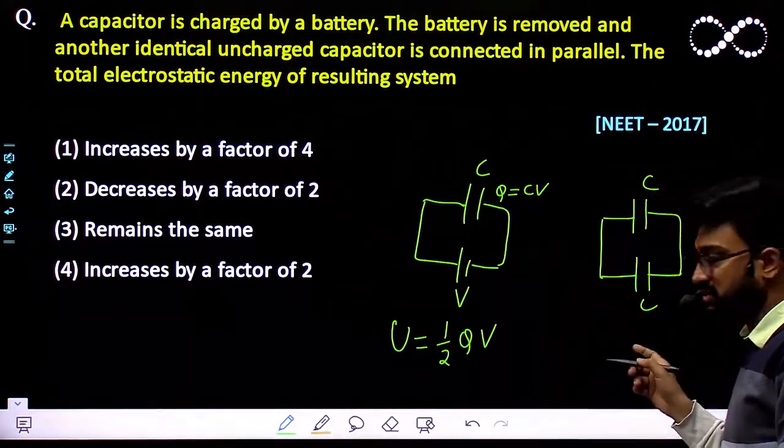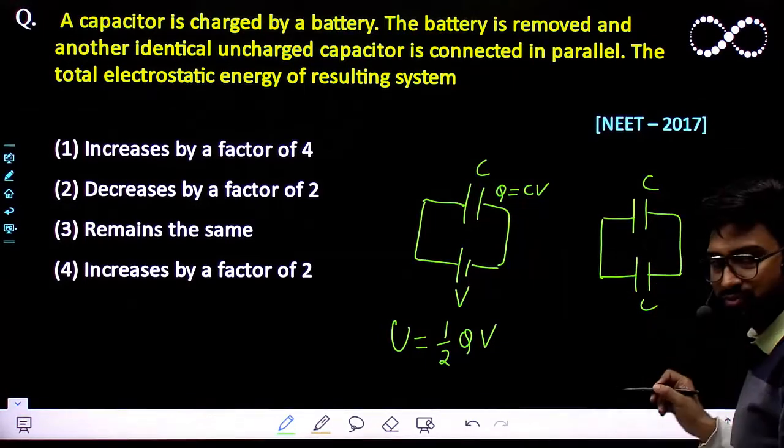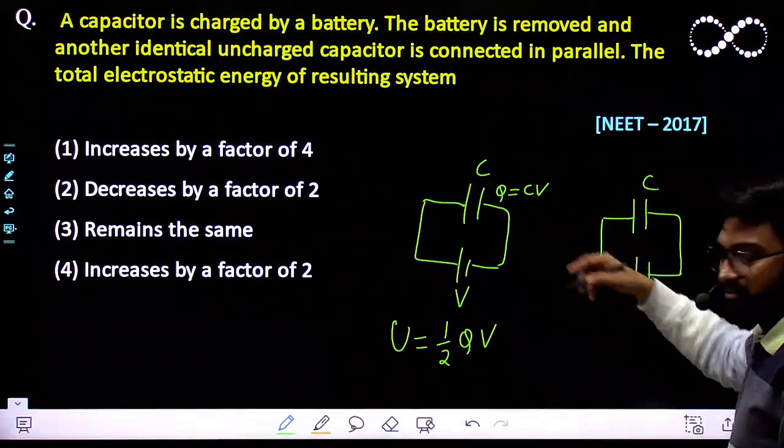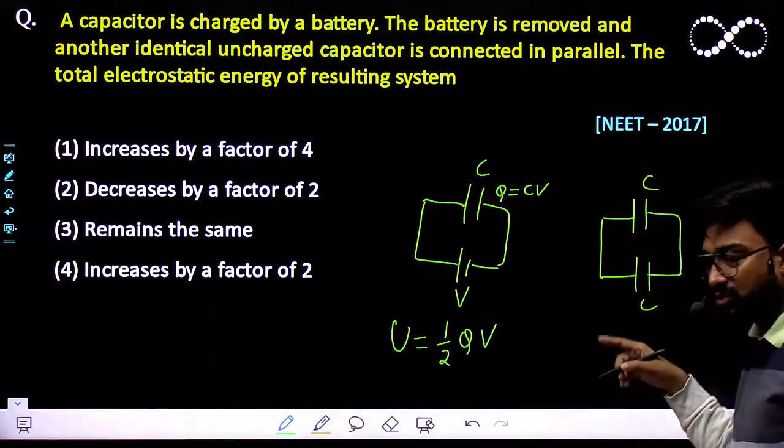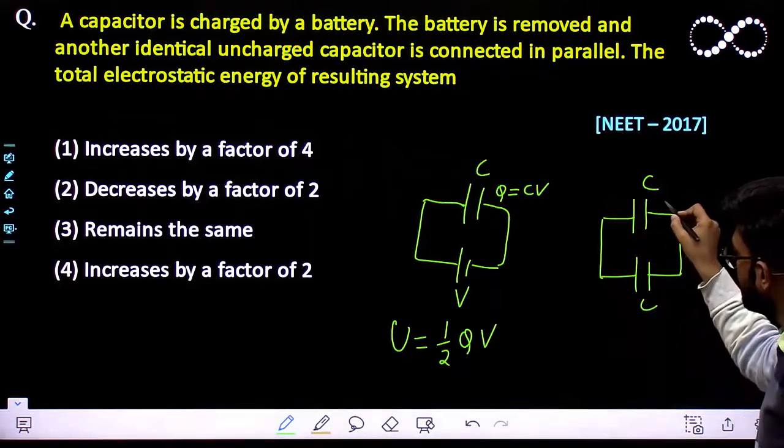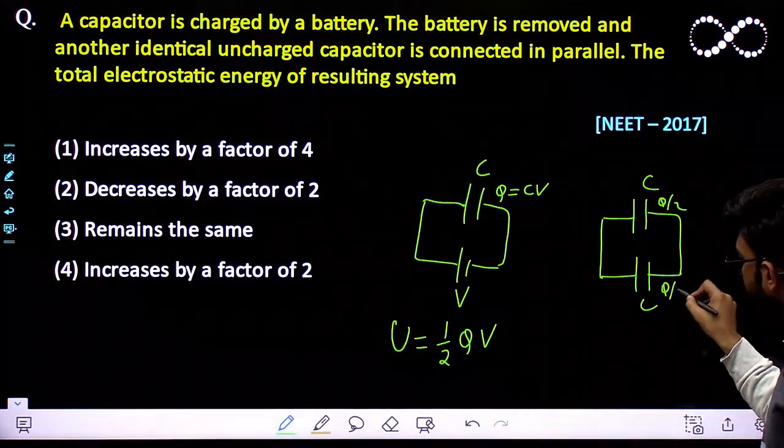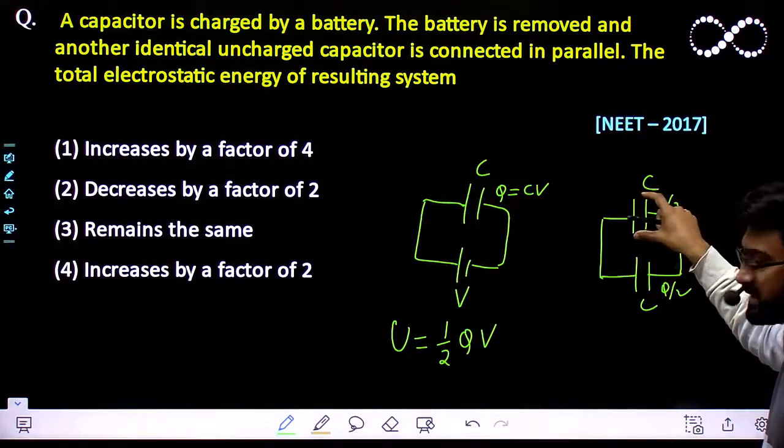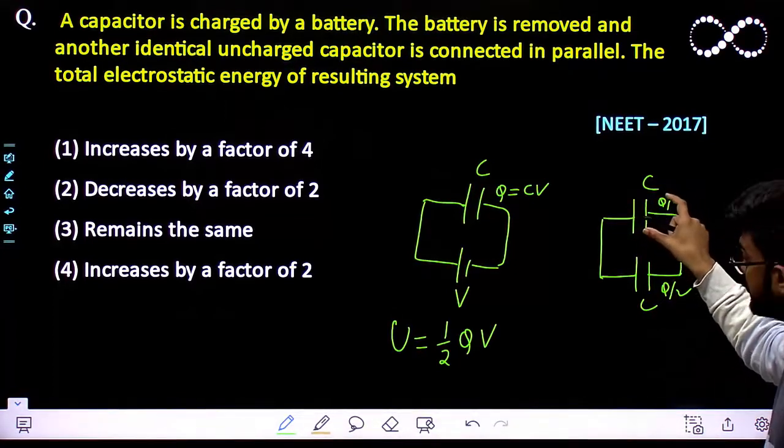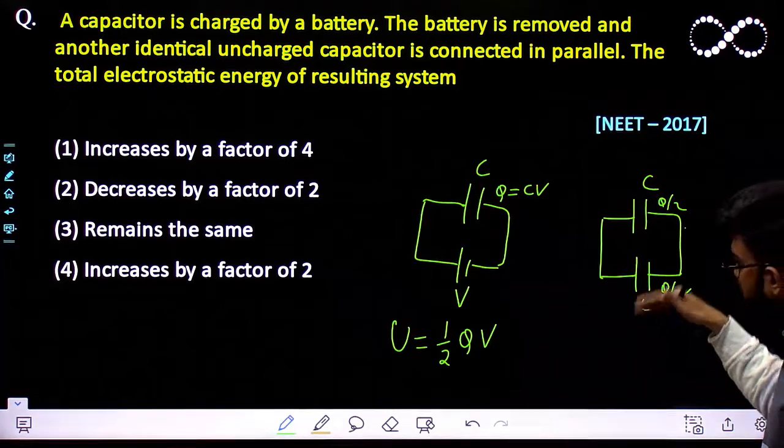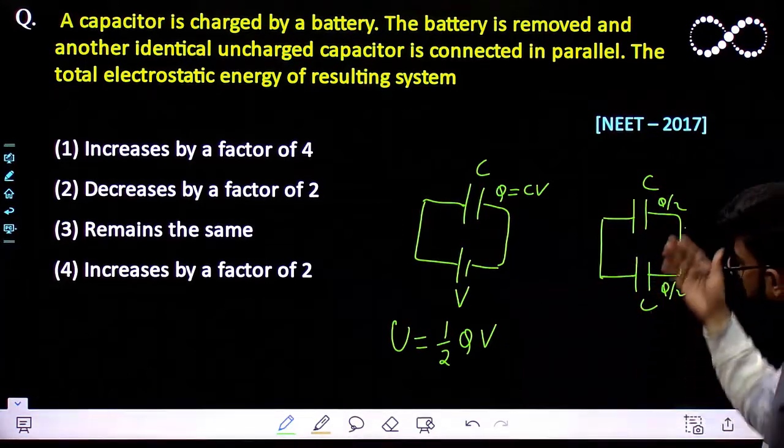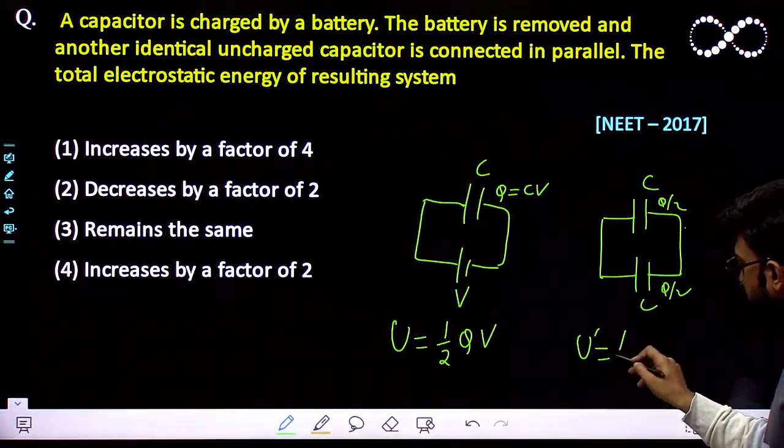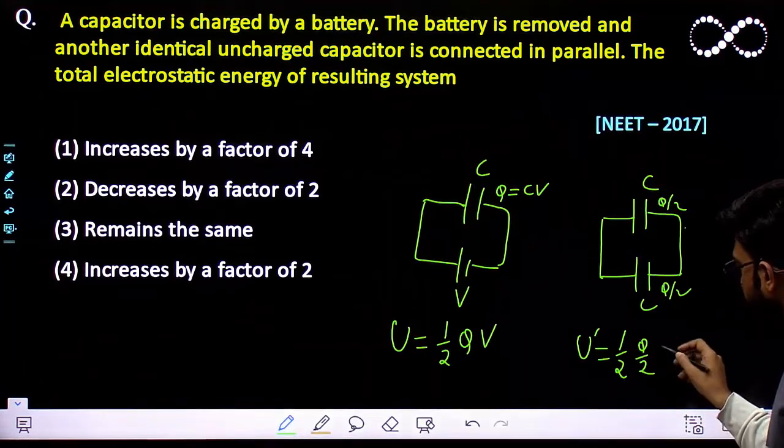So what about these two systems? Since they are in parallel, the potential difference across them must be equal. Earlier the charge was CV. Now because these two are similar, the charge distribution on each must be Q/2. Some charge will flow to this capacitor, so each gets Q/2 and the new potential would become half.